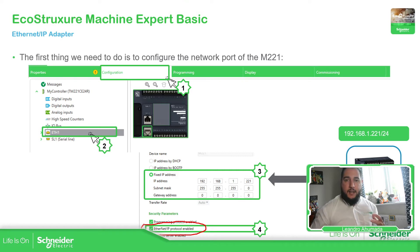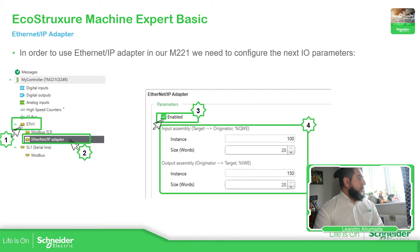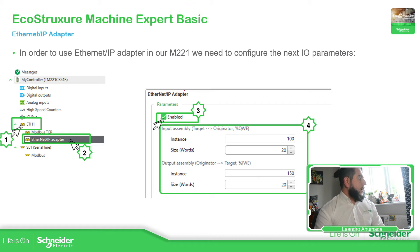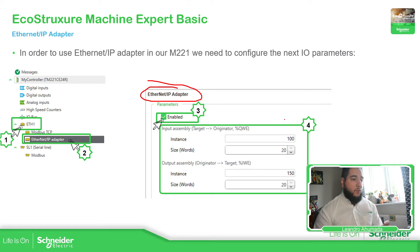It's not like I can scan other devices — it doesn't work in this way for the M221. So once we have defined and configured the IP address of the equipment and enabled the Ethernet port, what we need to do is to enable the adapter. Here we should be able to see the parameters that are used for read and write from the controller to the M221.